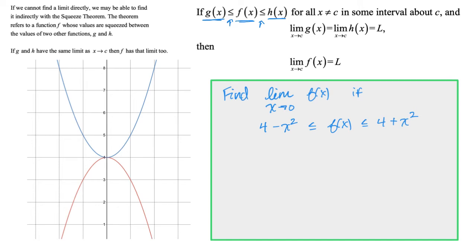And I actually went ahead and graphed these. This first function here is less than f of x. So that would be like this function. So this function is going to be g of x here. And the function above it is going to be h of x, which is going to be right here.